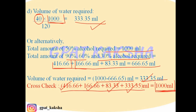This is the allegation method. In this way, you can solve other problems where a desired strength needs to be prepared from given strengths. For all such problems, you can apply this method of calculation.